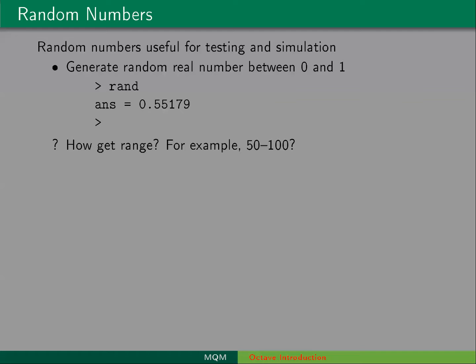You could type, well, 50 times rand. So if you type 50 times rand, that would give you random numbers between 0 and 50. And then if you added 50 to that product, then you would get random numbers between 50 and 100.